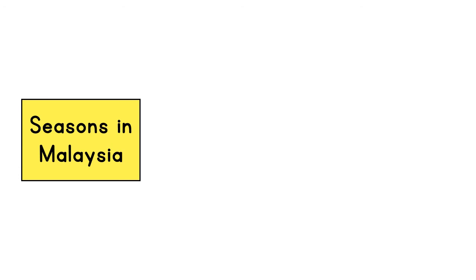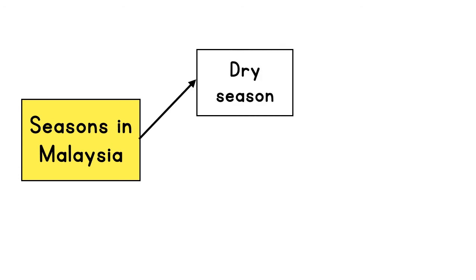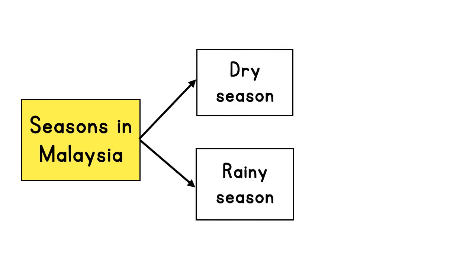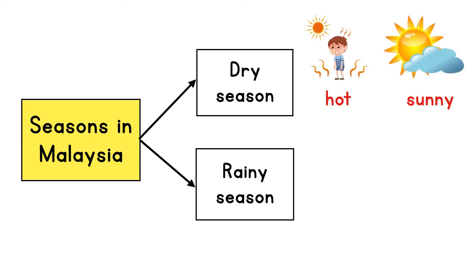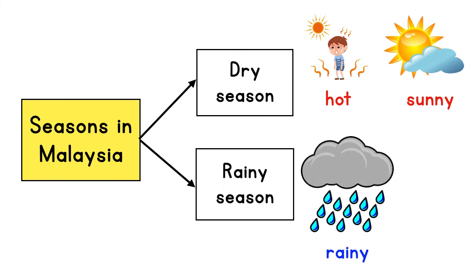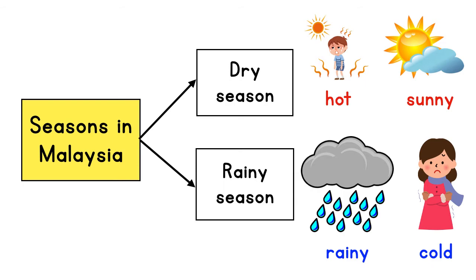However, in Malaysia, we only have 2 seasons, which are the dry season and the rainy season. Kita sudah belajar ini. During the dry season, it's hot and sunny. And during the rainy season, it's always raining and cold.